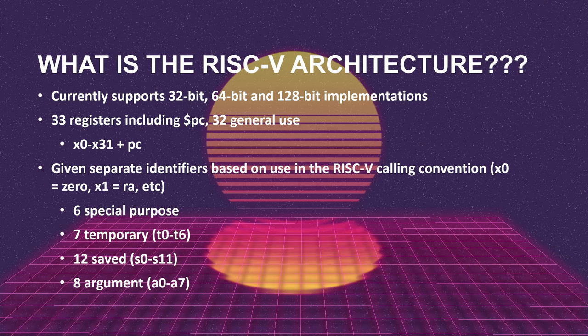Next, you have the temporary registers. Those are thought to be volatile — when you put data into those registers and call a separate function, the data will not persist across that function call. The other 12 are s0 through s11, called the saved registers. Those are non-volatile, so data you put into s0, for example, will still be there when the function returns. Finally, we have eight argument registers — a0 through a7 — used to pass arguments to functions following the calling convention.